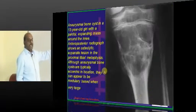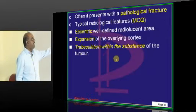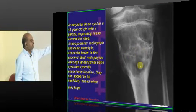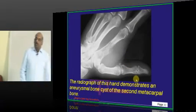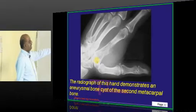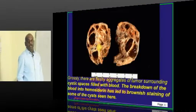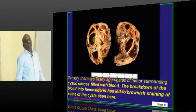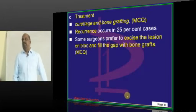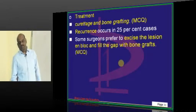The important findings that distinguish this from a simple bone cyst: number one, it is eccentrically placed and well defined, with expansion of the overlying cortex, and there is trabeculation into the substance of the cyst. Here is another radiograph showing an aneurysmal bone cyst in the second metacarpal, which can also lead to fracture. The gross appearance shows a blood-filled cavity with trabeculation defining the aneurysmal bone cyst. Treatment is curettage and bone grafting; some surgeons remove it en bloc and then put a graft.